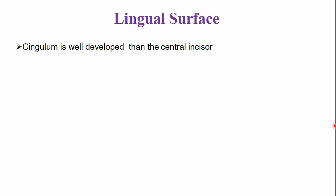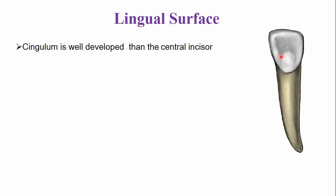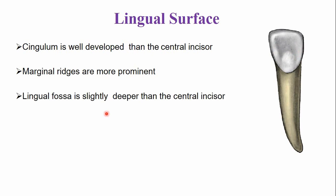From the lingual aspect, the cingulum is more well developed than that of the central incisor. The marginal ridges — the mesial marginal ridge and the distal marginal ridge — are also more well developed compared to the mandibular central incisor. Because of the well-developed marginal ridges and cingulum, the lingual fossa is slightly deeper compared to the mandibular central incisor.